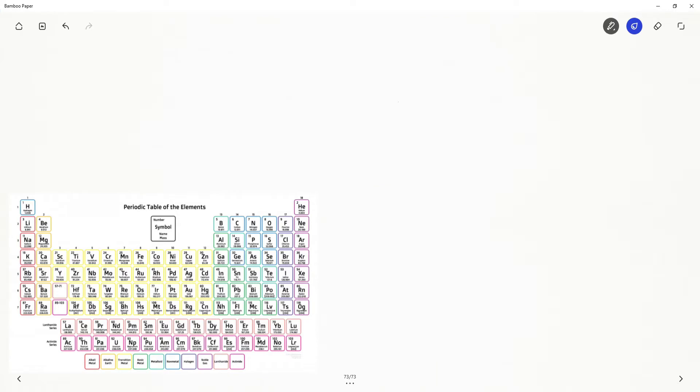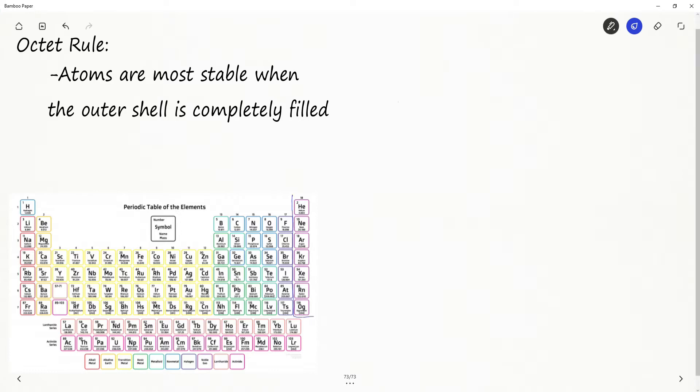The first thing I want to talk about is the octet rule. We know that atoms are most stable when orbitals are filled and specifically they are stable when the entire outer shell is filled. So the question is, are there any atoms that already have a full outer shell? The answer is yes. The noble gases all have a full outer shell.